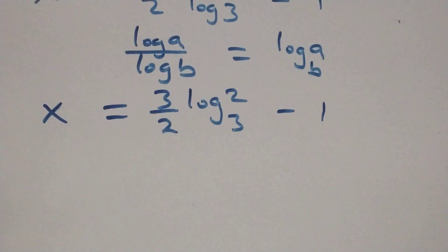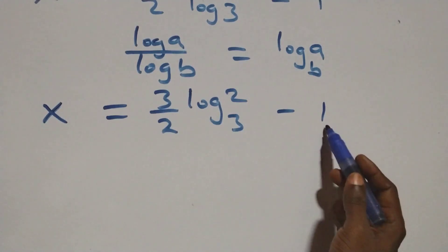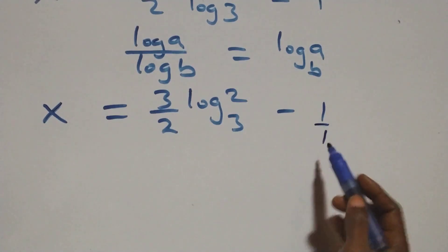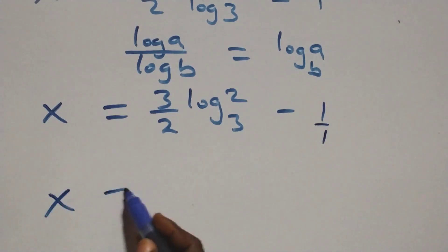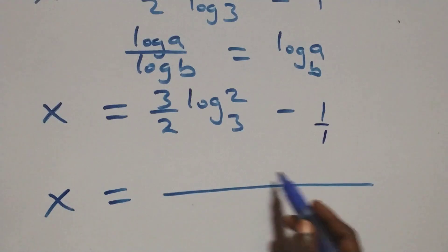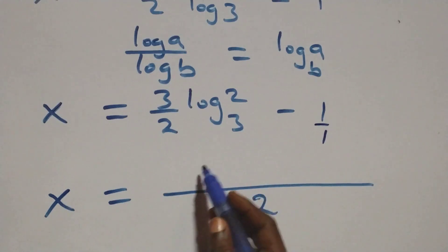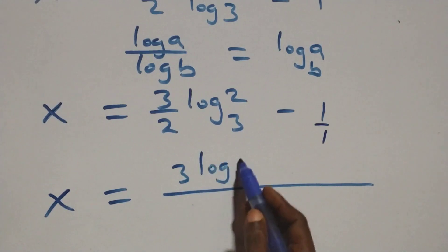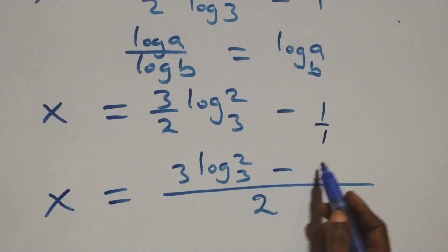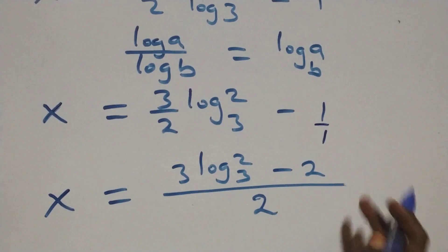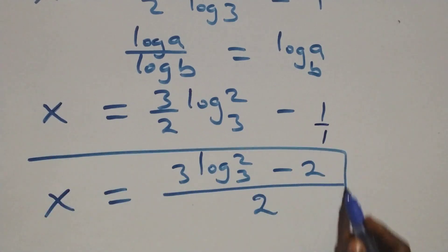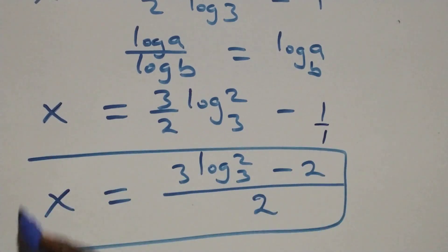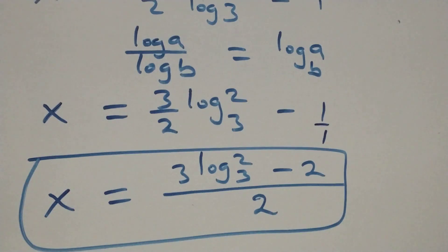Here we can bring this together as one fraction — this one over one — and we have x equals three log 2 base 3 minus 2, all over 2.